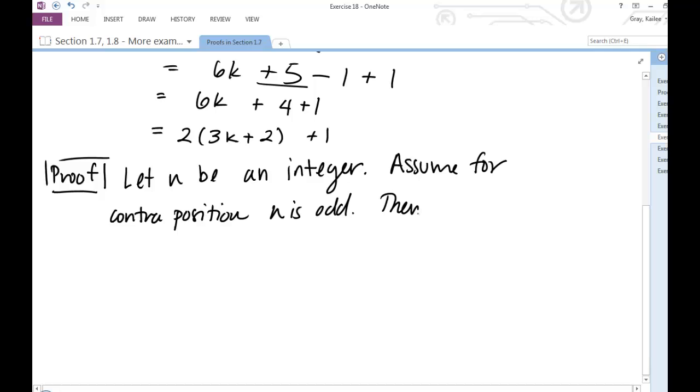Then, by definition of odd integers, n equals 2k plus 1 for some integer k.